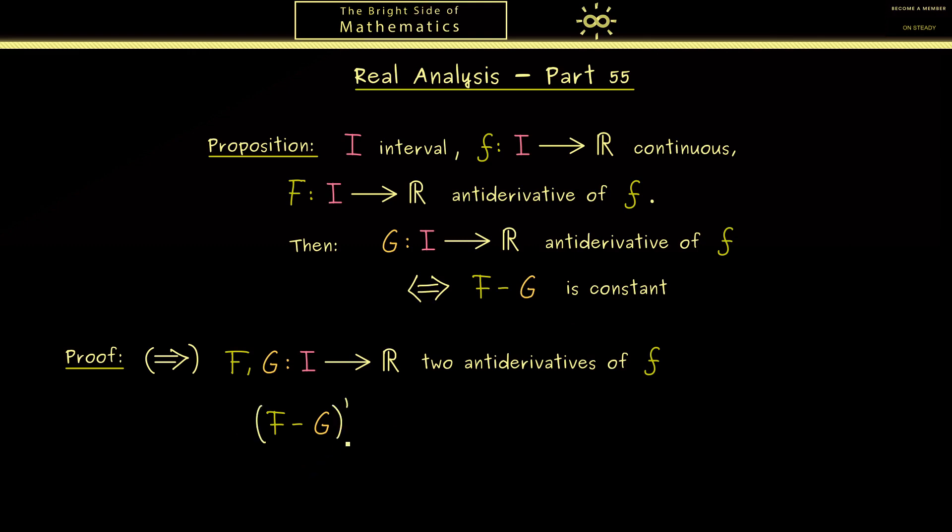Moreover, we also know we have linearity for forming derivatives. More precisely, we can write this as F' minus G'. And now we can simply use the fact that both functions are antiderivatives of f. Therefore we have f minus f, which is as you also know just zero. Hence we can just conclude that F minus G is a constant function.